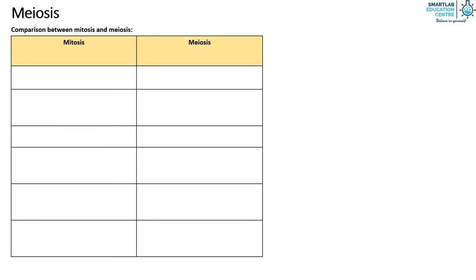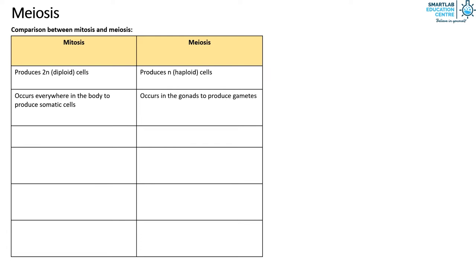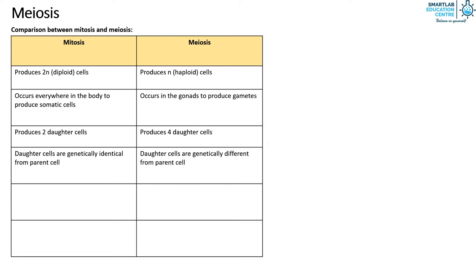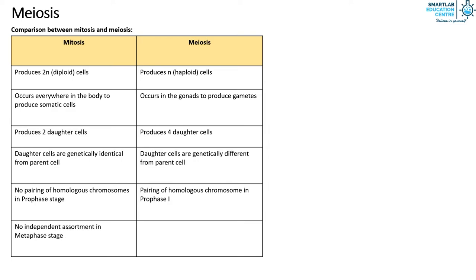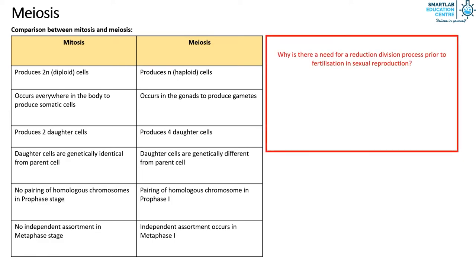Let's compare meiosis and mitosis. In mitosis, diploid cells are produced, but in meiosis, haploid cells are produced. Mitosis occurs everywhere in the body to produce somatic cells, but meiosis occurs in the gonads only to produce gametes. Mitosis produces two daughter cells, but meiosis produces four. In mitosis, daughter cells are genetically identical to the parent cell, but in meiosis they are genetically different. In mitosis there is no pairing of homologous chromosomes in prophase, but in meiosis pairing occurs in prophase 1. Lastly, independent assortment does not occur in mitosis, but it does occur in metaphase 1 of meiosis.